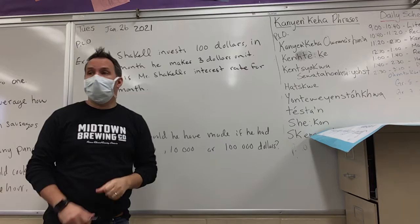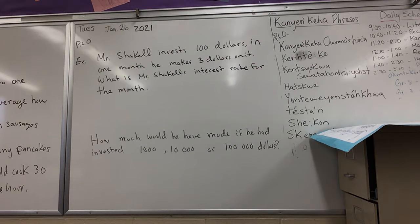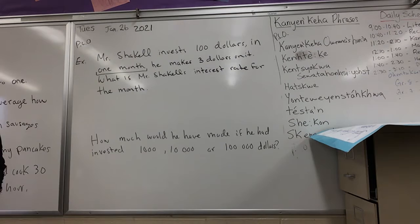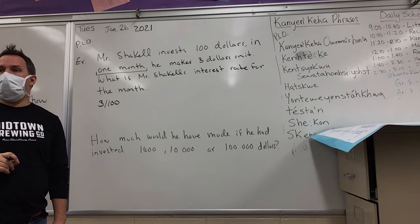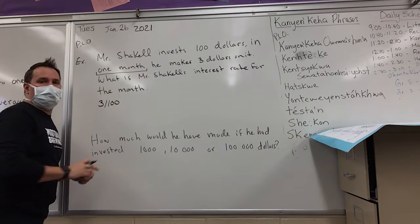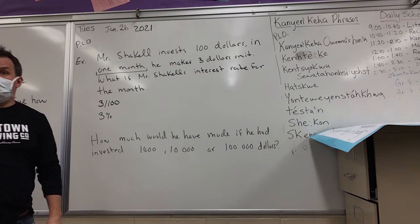Interest rates are usually in a percentage. So we know that for every hundred dollars, Mr. Shakel is making three dollars — he makes three dollars for every hundred. His hundred dollars turns into a hundred and three. Does that make sense to everyone? So how do we write this? It goes up by month. He makes three dollars for every hundred dollars. How can we write that as a percent? If you got three out of a hundred on a test — three percent. So his interest rate is three percent.